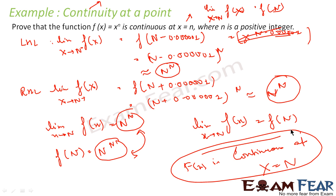So in all questions where you have to prove that a function is continuous at a point or not, the first step is to find whether the limit exists for that particular point. If the limit exists, then we have to prove that the limit is equal to f(c), where c is the point we are talking about — in this case, c is equal to n.